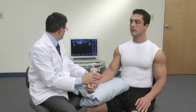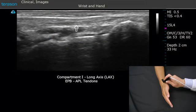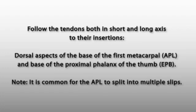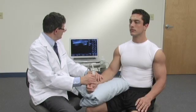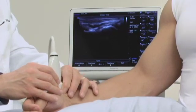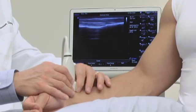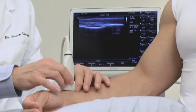Now I'm going to turn the probe 90 degrees to look at the tendons in their long axis. We can follow those tendons distally towards their insertions and proximally towards the myotendinous junction, both in long and short axis.